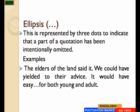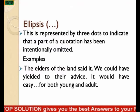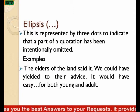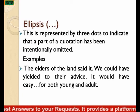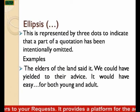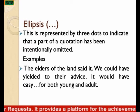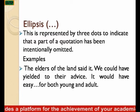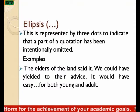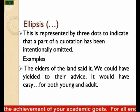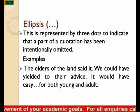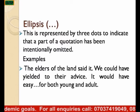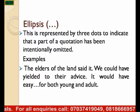Ellipses is represented by three dots to indicate that a part of a quotation has been intentionally omitted. We use ellipses in quotations when you are quoting someone and you don't need a part of the person's quotation — you lift the parts you need and leave the parts you do not need. For example: 'The elders of the land said it... you could have yielded to their advice. It would have been easy … for both young and adults.' The ellipses means there is something omitted before 'for both young and adults.'